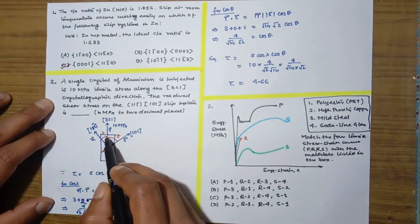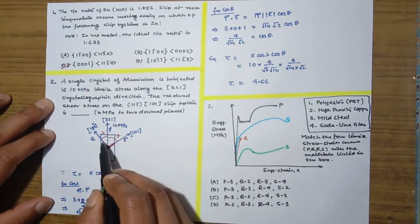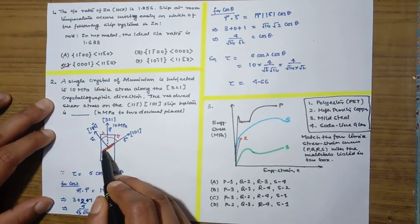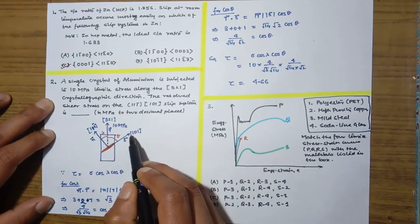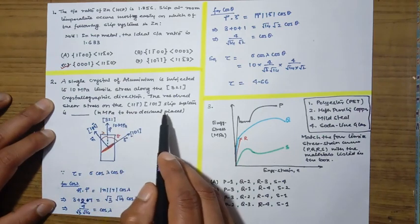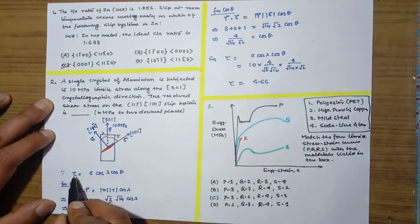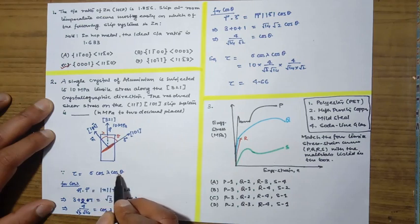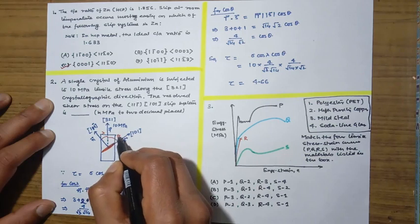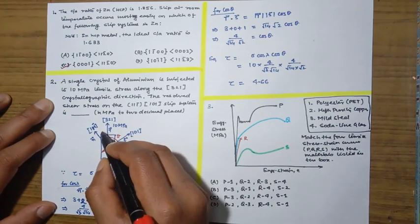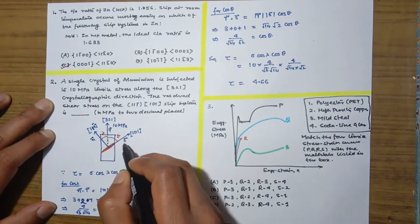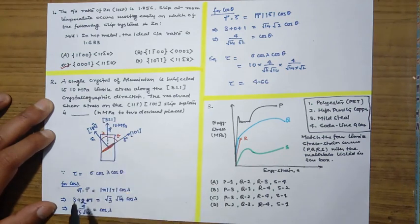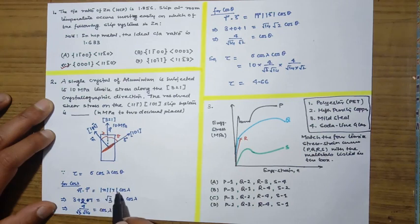As shown in the diagram, the tensile stress acts in the [321] direction. The slip plane has normal [11̄1] as given, and the slip direction is [101]. To calculate the resolved shear stress, the formula is τ = σ·cosλ·cosθ, where λ is the angle between the slip plane normal and the tensile direction, and θ is the angle between the slip direction and the tensile direction.